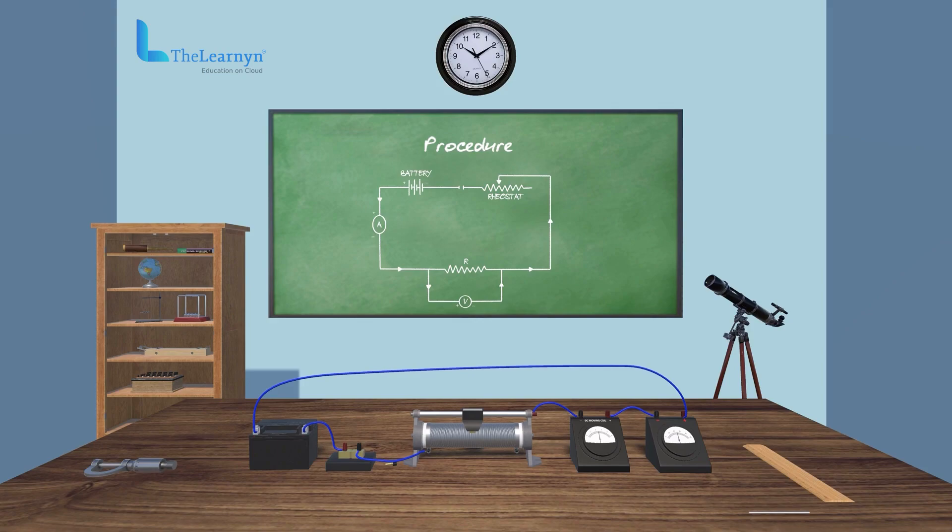Take resistance wire and gently stretch it. Then, measure its length using a meter scale and cut wire at a given point. Now, we can connect the wire in parallel to the terminals of the voltmeter with the positive end connected to the negative end.